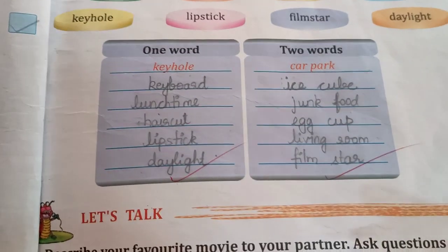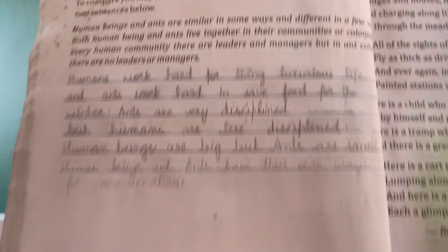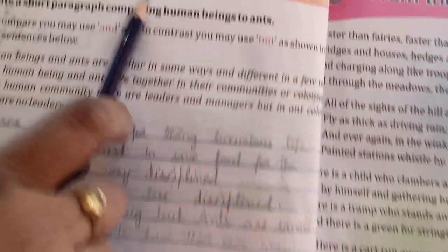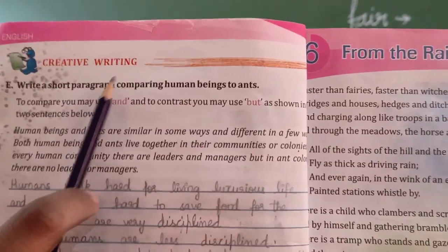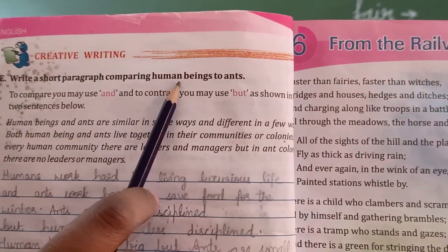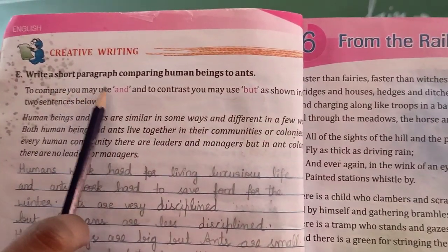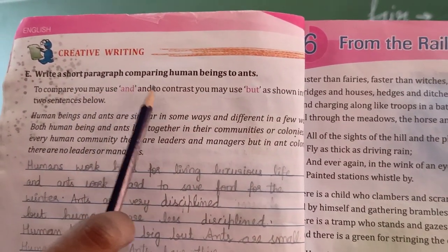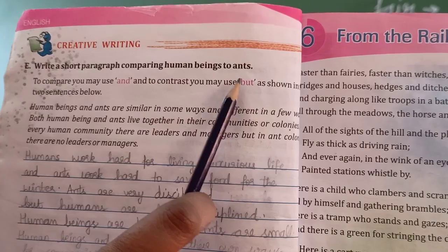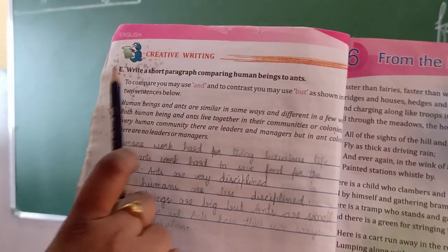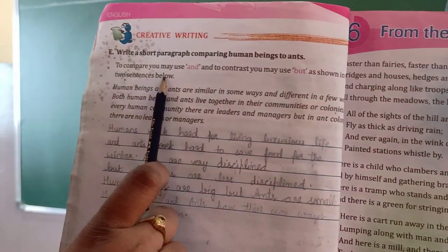Finish this, children — you have to complete this exercise. Now come to page number 32. Creative writing: write a short paragraph comparing human beings to ants. To compare, you may use 'and'; to contrast, you may use 'but'. Contrast means writing the difference. As shown in the two sentences below.